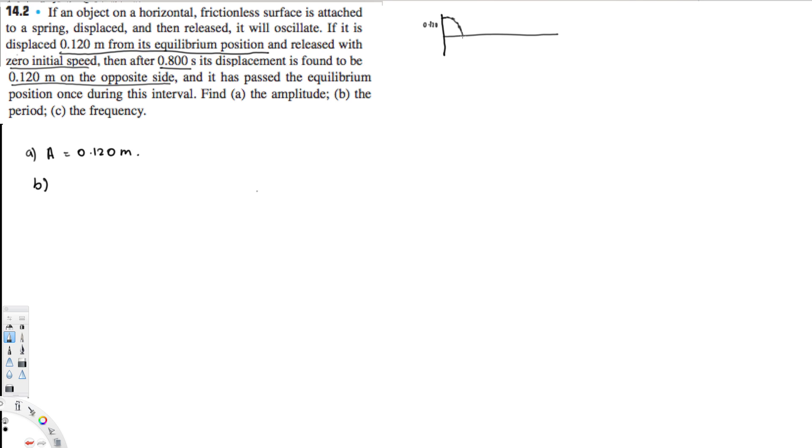So after 0.800 seconds, it has come to be like this. And we know this is half lambda, because half wavelength is a full cycle.